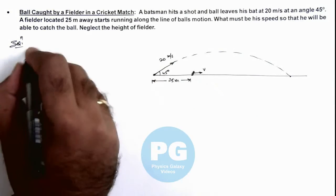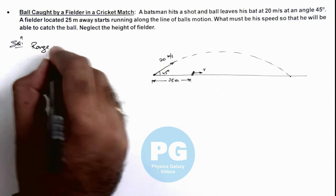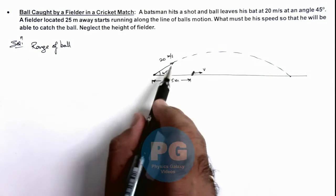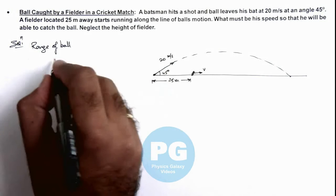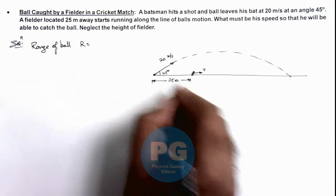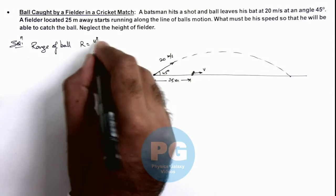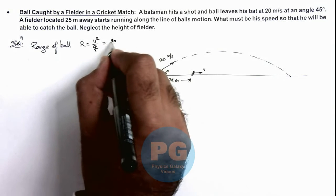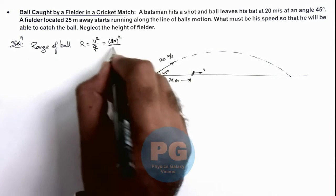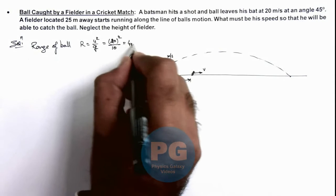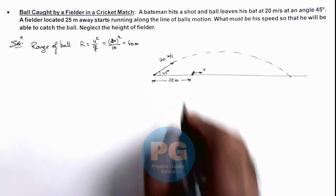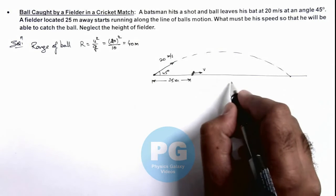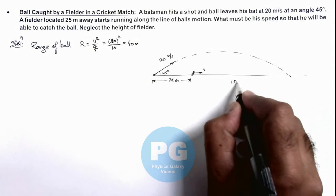In this situation, first we can find out the range of the ball after the shot. Since theta is 45 degrees, this is the maximum range, which is u² divided by g. Substituting the values, the speed is 20, so it is 20² divided by g, which gives 40 meters. That means if the fielder's distance is 25 meters, the remaining distance where the ball will land on the ground is 15 meters.